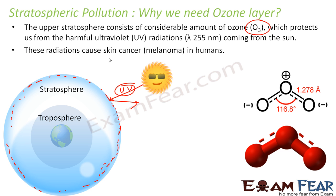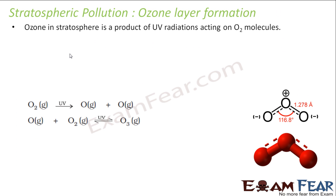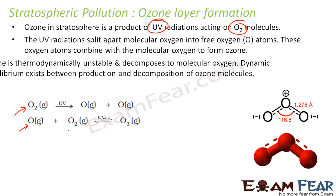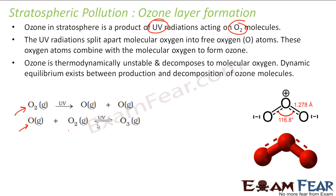UV rays cause skin cancer, so the ozone layer is critical. Ozone is a product of UV radiation acting on oxygen molecules — there is a dynamic equilibrium. Oxygen (O2) breaks into two oxygen radicals, and these oxygen free radicals react with O2 to form ozone (O3). UV radiation splits O2 into radicals, which combine to form ozone. Ozone is unstable, so the system remains in equilibrium.